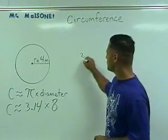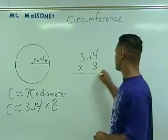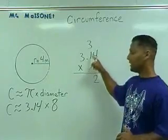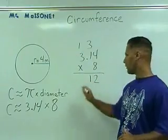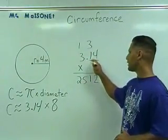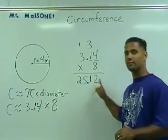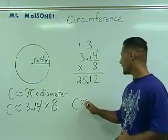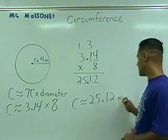We're going to take 3 and 14 hundredths and multiply it by 8 meters. 8 times 4 is 32, carry the 3. 8 times 1 is 8, plus 3 is 11, put a 1, carry another 1. 8 times 3 is 24, plus the 1 is 25. Because we have two place values after our decimal, we place the decimal in the answer with two place values as well. So our final answer is: circumference is approximately equal to 25.12 meters.